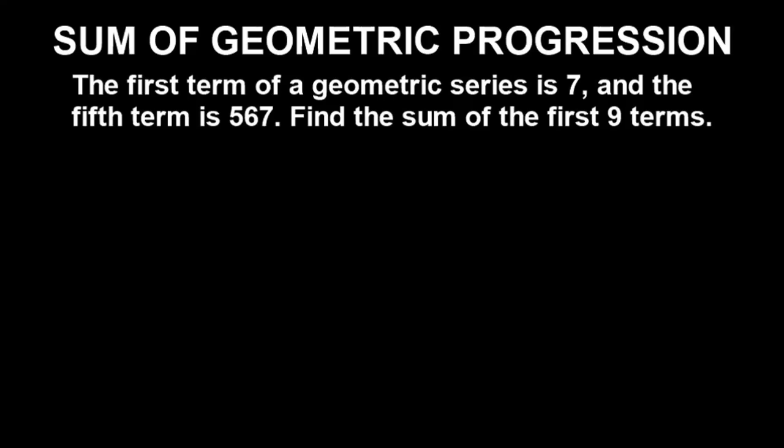Let's look at this typical example and solve it together. After solving this example with you, you'll be able to replicate the same solution for other questions. The question says: the first term of a geometric series is 7, and the fifth term is 567. Find the sum of the first 9 terms. Let me reset the calculator.